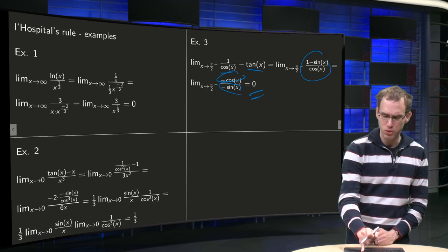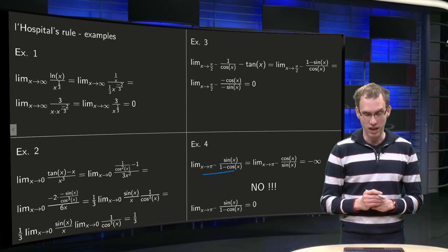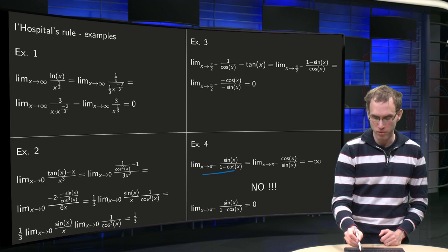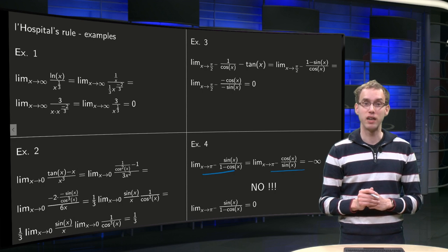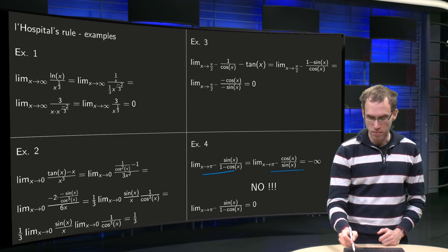So this L'Hopital's rule really works wonderful. So let's apply it in this limit as well: sine of x over 1 minus cosine of x. Just use L'Hopital, we get the cosine of x over sine of x. Now cosine of x becomes minus 1, sine of x blows up, so we get minus infinity.